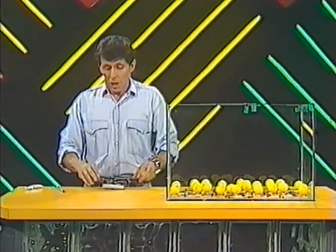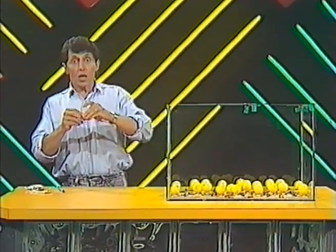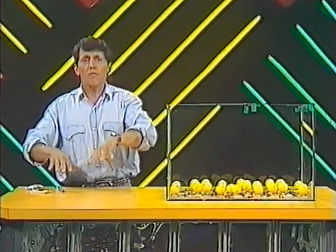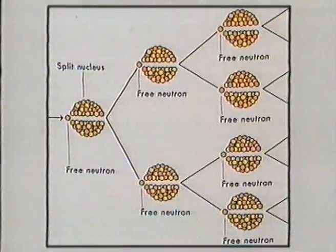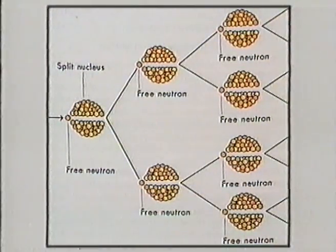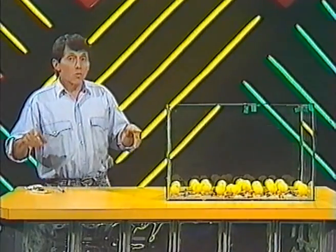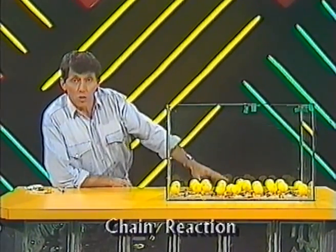Wouldn't it be fun if we had a couple of other mouse traps set up in the studio so that the flying ping pong balls landed on those? Then we'd have more ping pong balls flying in the air, and more, and more. It'd be something like what's happening in this diagram here. It's called release of nuclear energy because when one uranium atom is split by a neutron, if it releases two or more neutrons, they can split more uranium atoms, and more and more. Eventually, we get what's called a chain reaction, and a huge amount of energy is released.